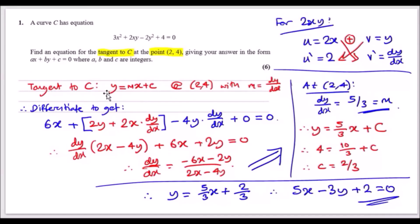Going back to y = mx + c, plug in m = 5/3. Then substitute the point (2, 4): 4 = (5/3)(2) + c, which gives 4 = 10/3 + c, so c = 2/3. You could also use y − y₁ = m(x − x₁) — both methods work. Finally, substitute back into y = mx + c and rearrange into the required form by multiplying through by 3 and subtracting y, giving the final answer.